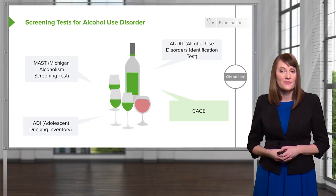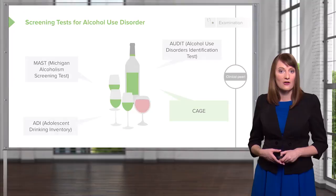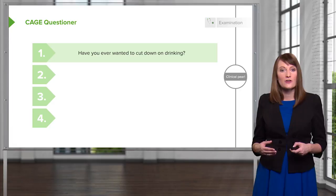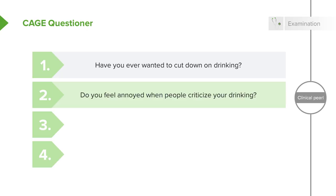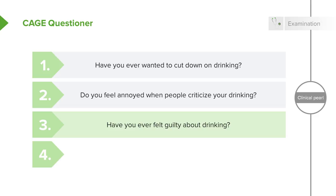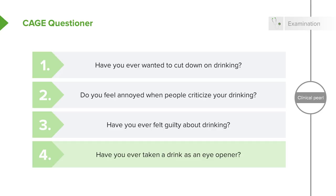The CAGE is a very easy screening test to administer. When administering the CAGE, you start by asking: have they ever felt a need to cut down on their alcohol use? Have they ever been angry or annoyed when people are critical of their drinking? Have they ever felt guilty about their drinking? And finally, whether they've ever needed an eye-opener — a drink first thing in the morning — which can be a telltale sign of an alcohol problem.